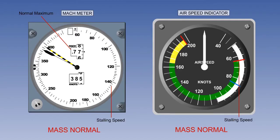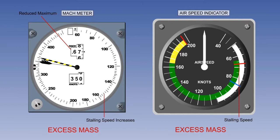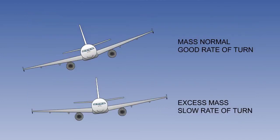The aeroplane's speed range will also be affected if mass limits are exceeded. It will reduce the maximum speed, normally a Mach number, and increase the stalling speed. Exceeding mass limits will have an important effect on aeroplane manoeuvrability because of the decrease in ability to change its flight path.